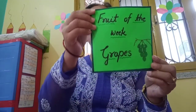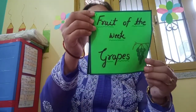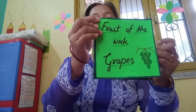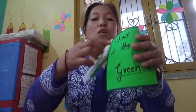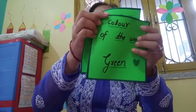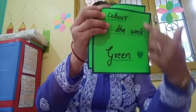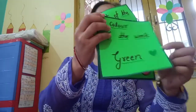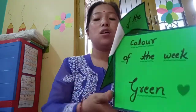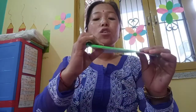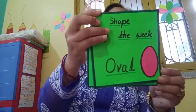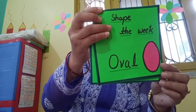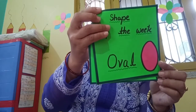Fruit of the week is grapes. Color of the week is green. Shape of the week is oval.